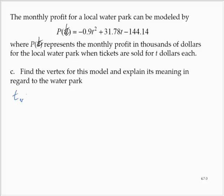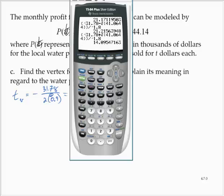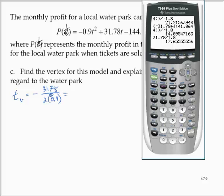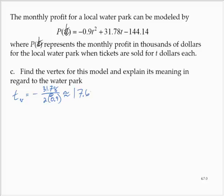We have the t-coordinate of the vertex, which is -b/2a. So calculating that, we would have 31.78 divided by 1.8, which is 17.65 repeating. So 17.66 roughly.